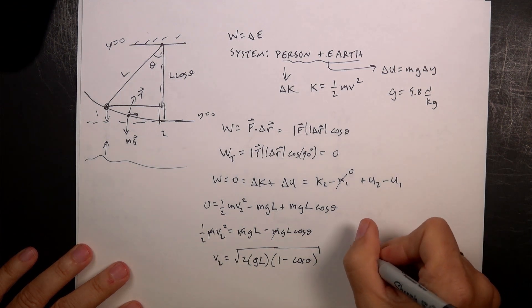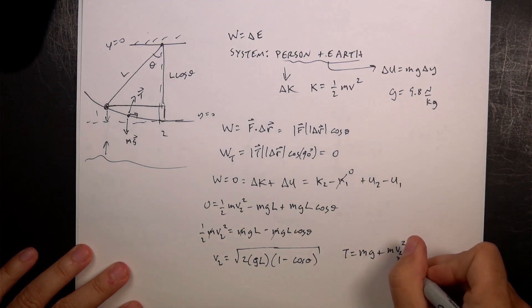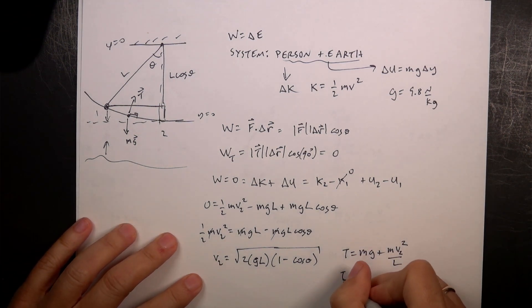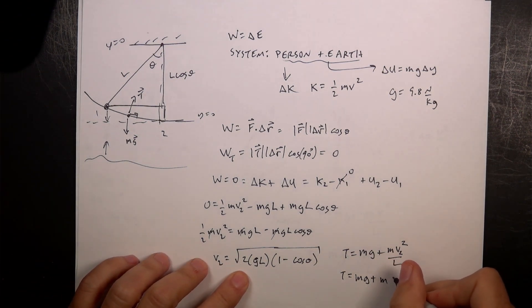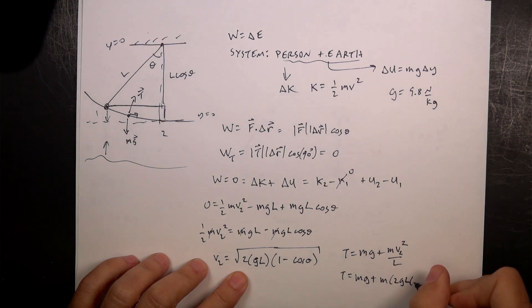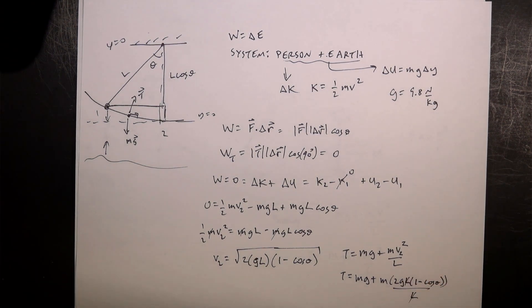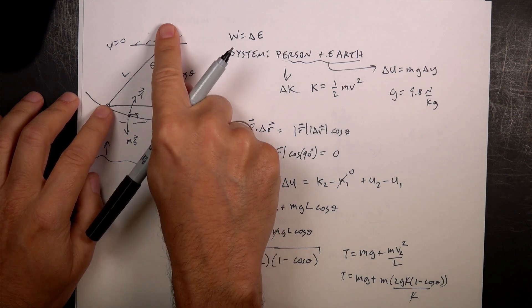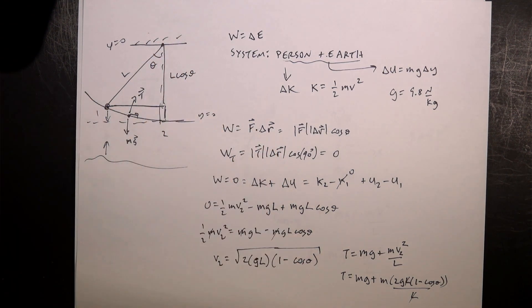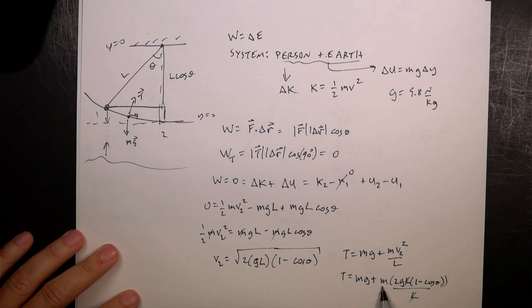Now I want to solve for the tension, which I already said. T equals MG plus MV squared. That's actually V2 squared over L. So if I put in this V2, I get T equals MG plus M. And then I need to square the square root. So it's just going to be 2GL times 1 minus cosine theta. All of that over L. And you'll notice that the length actually cancels, which is really kind of weird. But the thing is, the longer this is, the faster they're going. But the longer it is, the lower the acceleration, too. So I think it's kind of weird that it cancels, but it does indeed cancel. And you look right here, I get MG, that's a force. And then here I get M times G is a force. 1 and cosine theta have no units. So that's all cool.